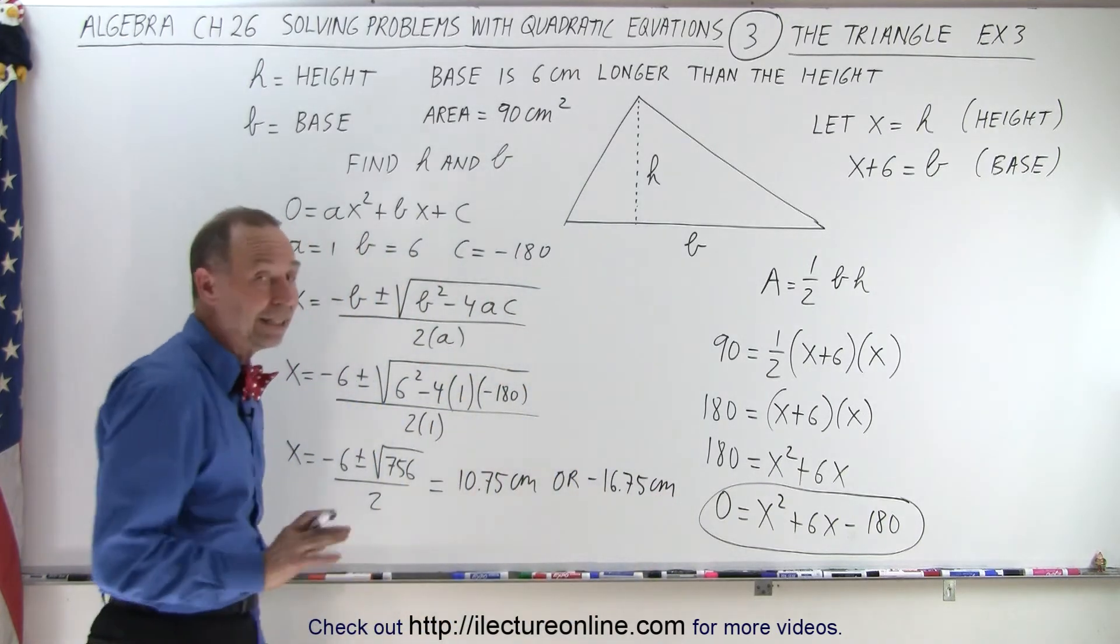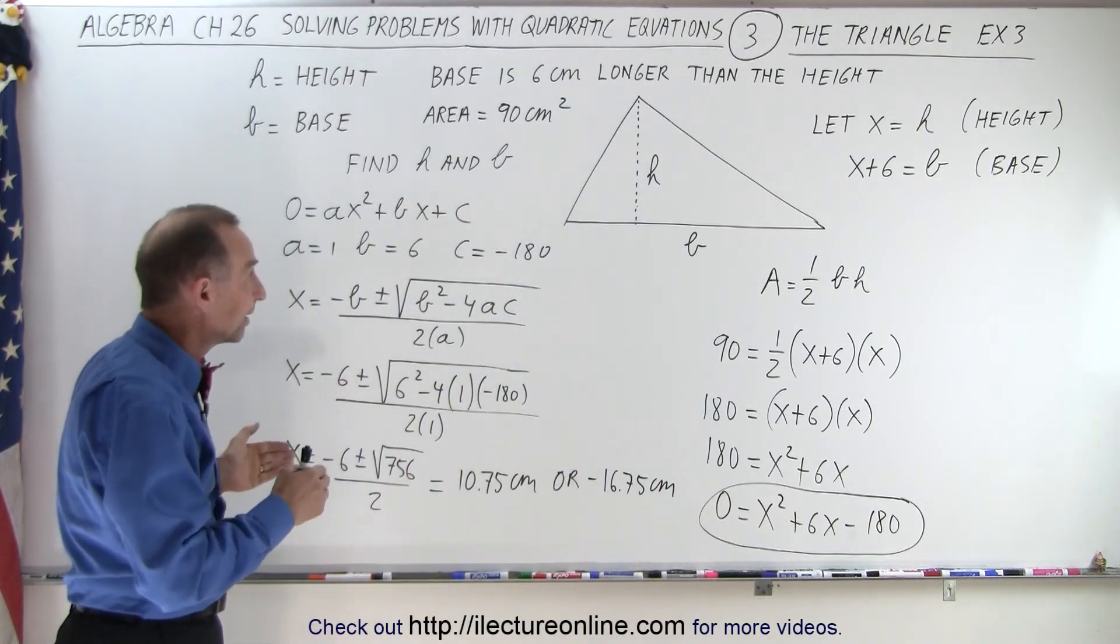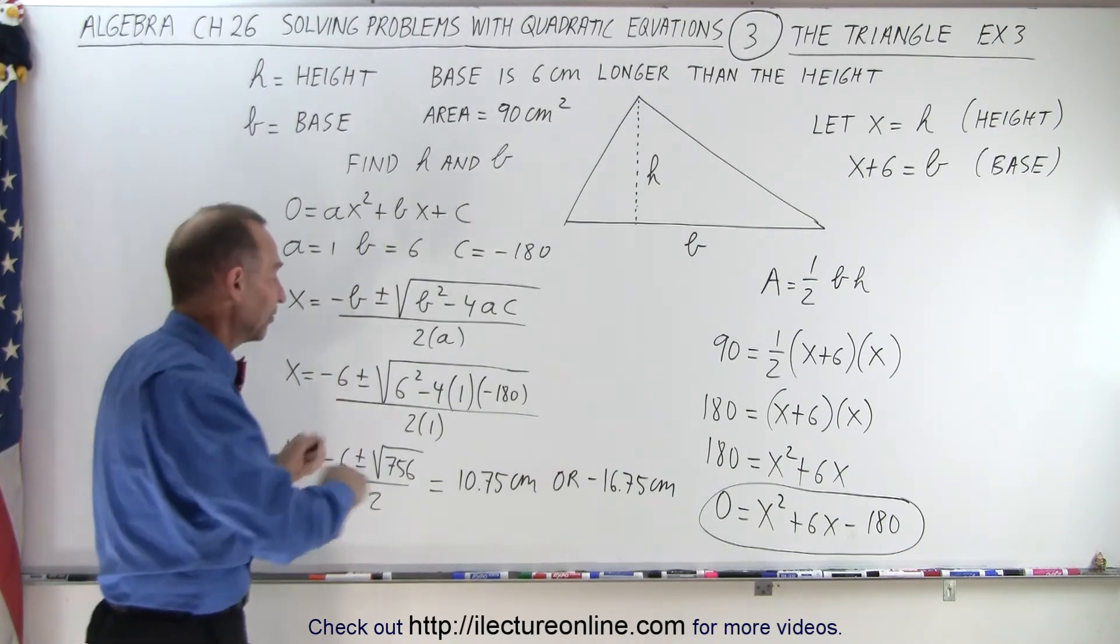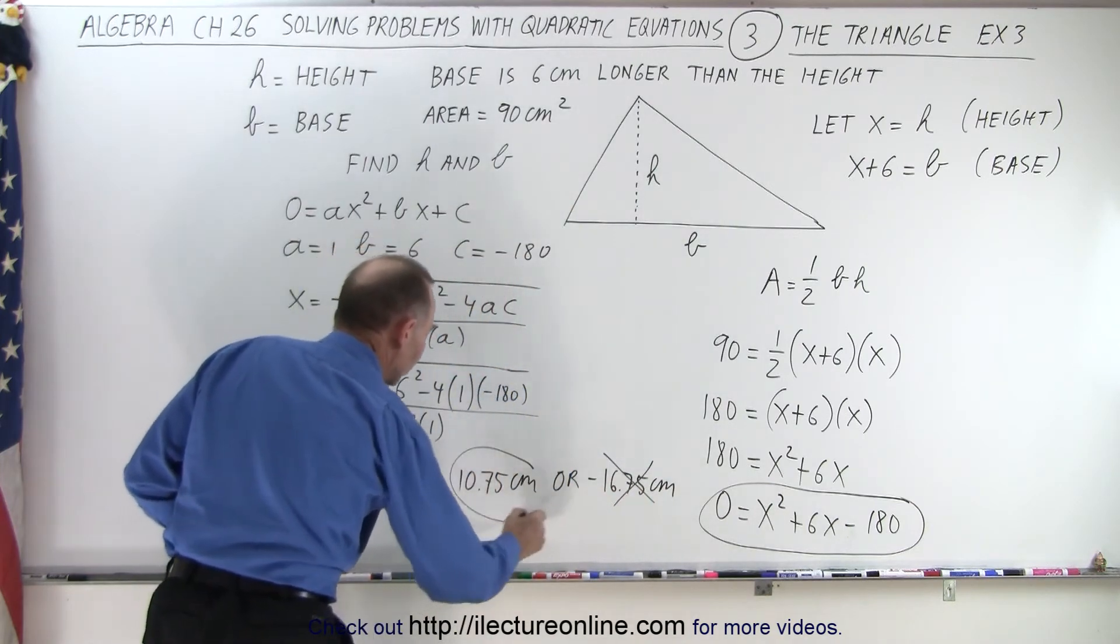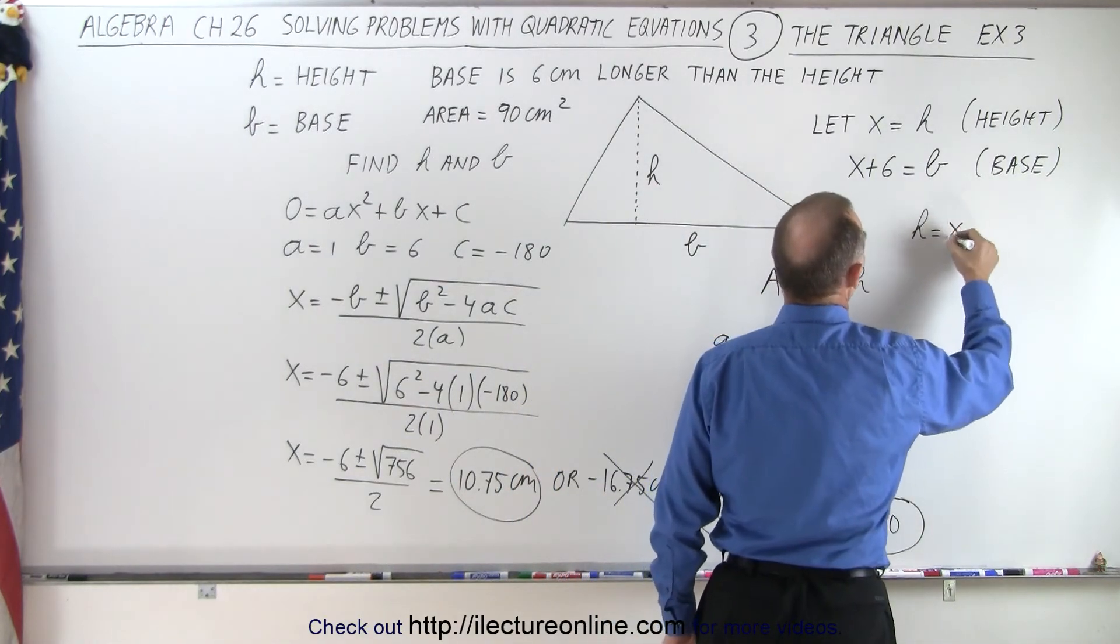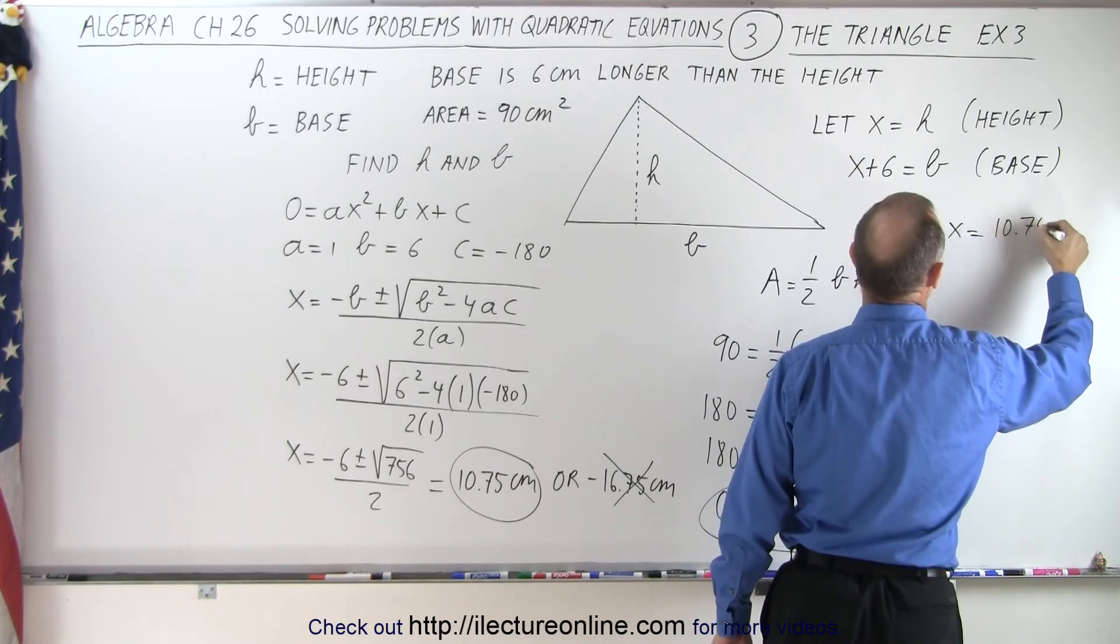Now, in this case, since we're dealing with a real problem, a triangle, x, which is the height, cannot be less than 0. It cannot be a negative number. So the negative number is not possible. This is the only possible solution. In this case, we could say that h, which is equal to x, is equal to 10.75 centimeters.